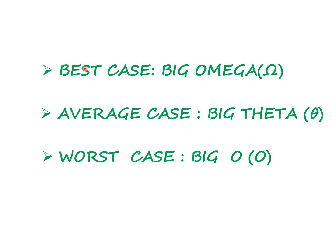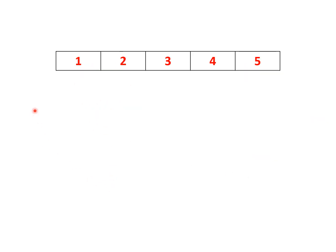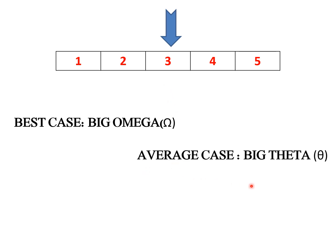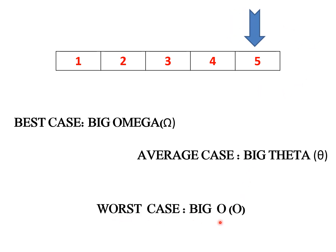Consider this array. If we need the element at the start of the array, it is called the best case. If we need the element at the middle, it is the average case. If we need the element at the end, it is the worst case. Since comparing the maximum runtime is most useful, in most cases we consider only the worst case.